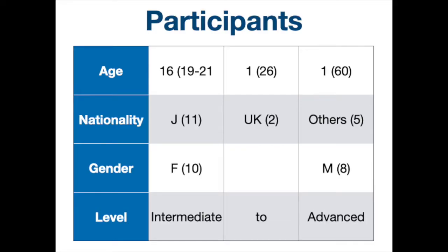We got 18 replies from the survey and then we had seven face-to-face interviews as well. 18 people participated in our study. 16 people are between 19 to 21 years old, one is 26, and another one is 60 years old. Most of them are Japanese and two are from the UK. Five others are from Sri Lanka, Korea, China and Hungary. There were 10 female students and 8 male students, with language levels ranging from intermediate to advanced and native speaker level.